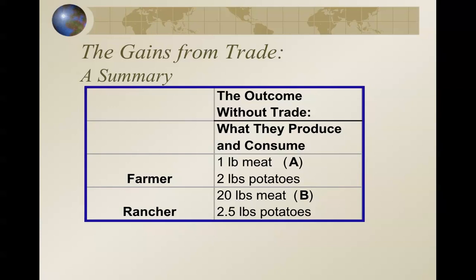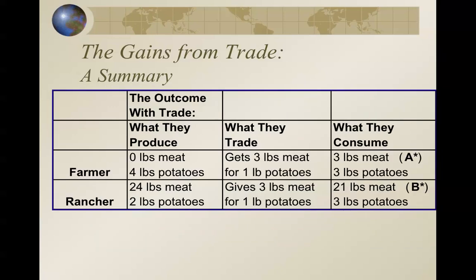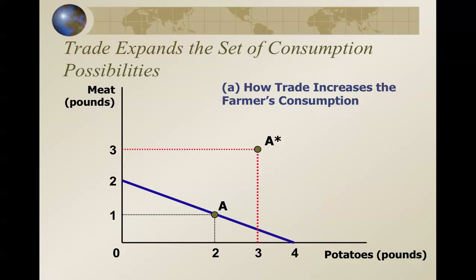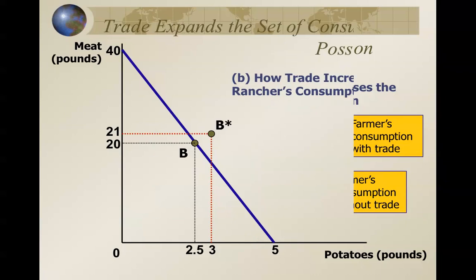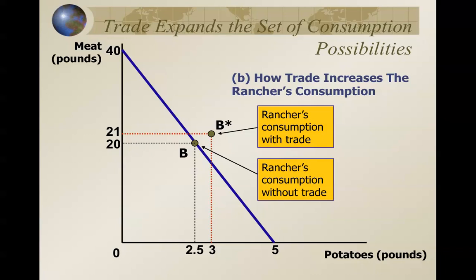Now our next slide is going to show the two parties trading with each other. With trade, assuming they want to trade, the farmer will specialize and produce only potatoes, and the rancher will specialize and produce mostly meat. Then they trade — one side of the trade is the flip side of the other — and then they consume at points A-star and B-star. The farmer is going to get far more meat and potatoes than under self-sufficiency. The rancher, too, is going to benefit from the trade — not as much as the farmer, but still, both parties will benefit in terms of more goods available.